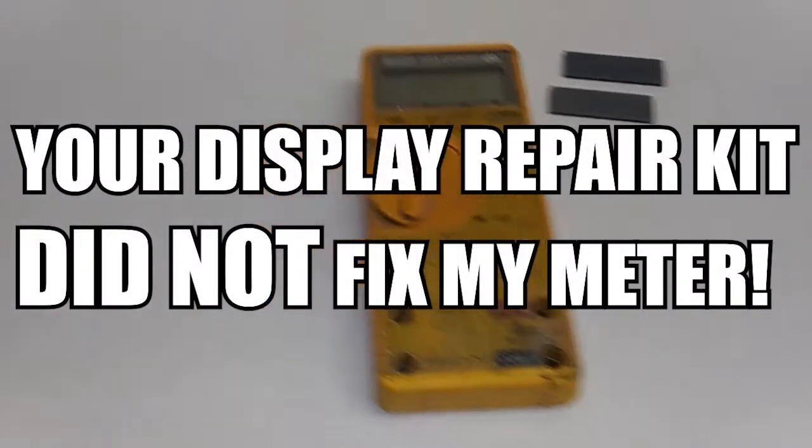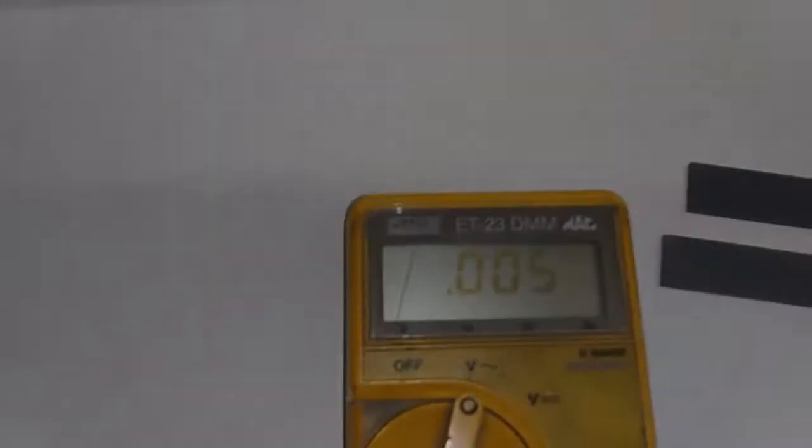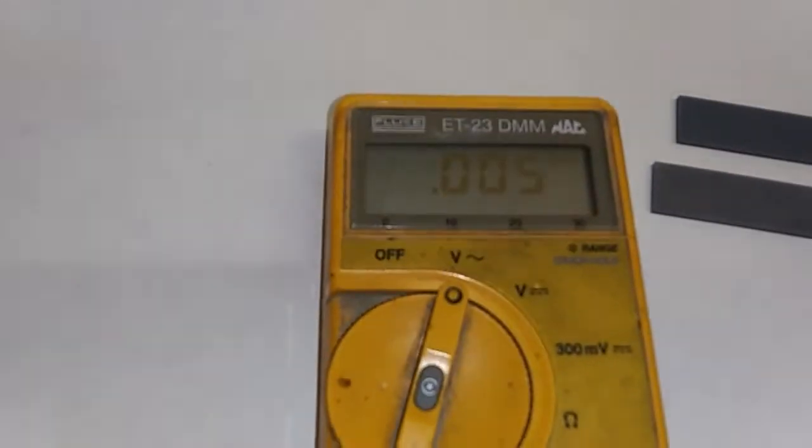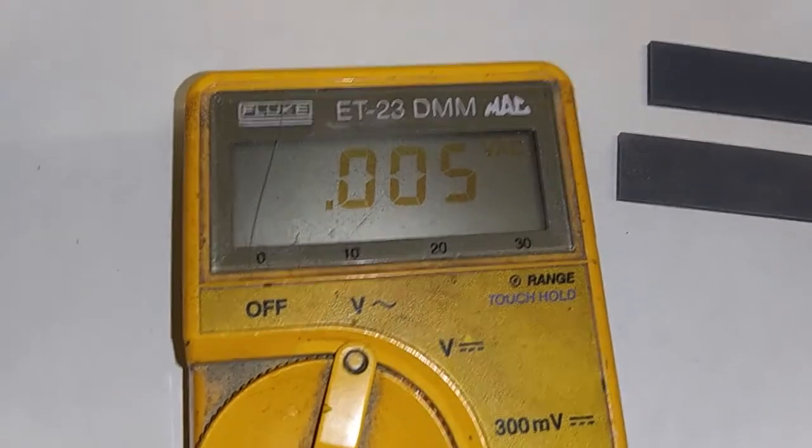Hello everybody, it's Hardy with electronic test equipment and we are looking at a Fluke 23. This happens to be a Mac ET-23 DMM, same thing as the Fluke 23.